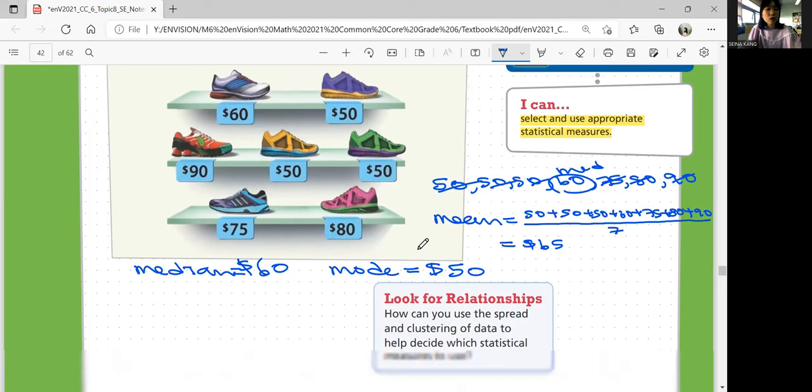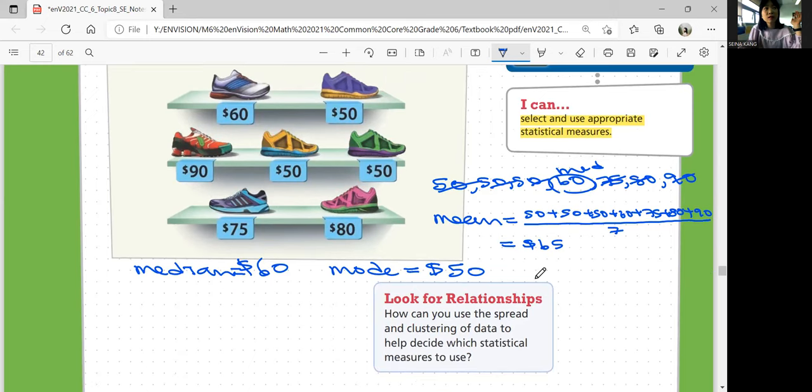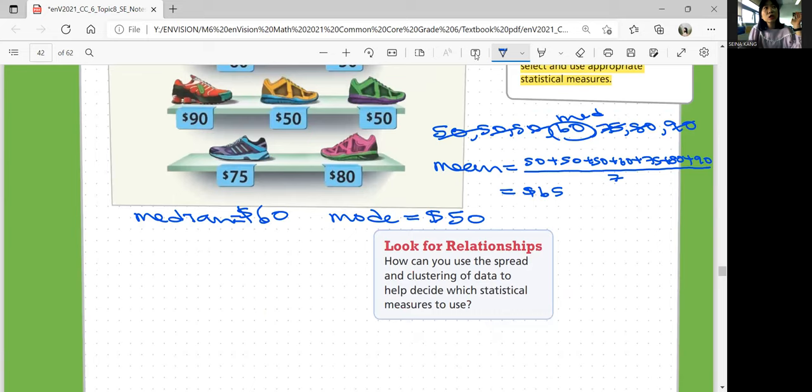All right, so which one describes our data the best for the typical price of shoes? Typical price. So if you look at the percentage of shoes that has the same price, typically, it's 50 if you're using the mode. But on average, if you're talking about the average, you can say typically it's going to be about 65 when you're thinking about how much should I bring?